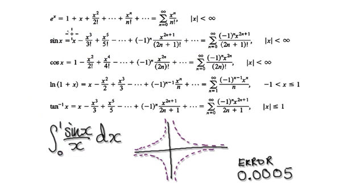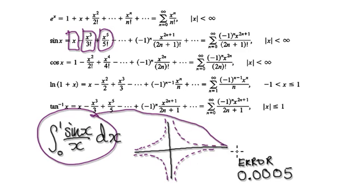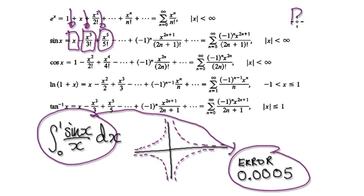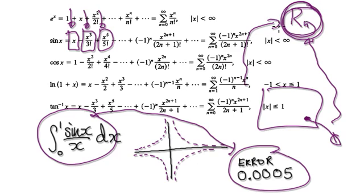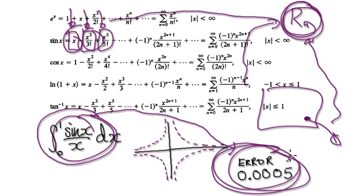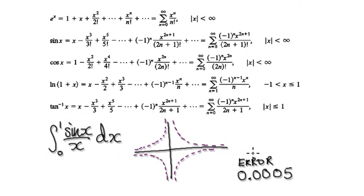Our main question is to work out how many terms we would need in order to get the area to be within this level of accuracy. In order to work out the number of terms needed, we would need to think about the remainder. In order to make use of this remainder, we need to show that our alternating series converges. Then we can make use of this R, which will allow us to work out the number of terms needed to be within this level of accuracy.